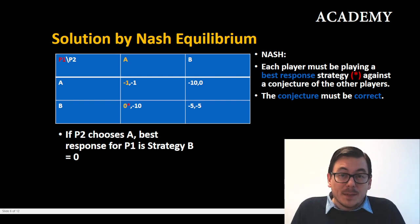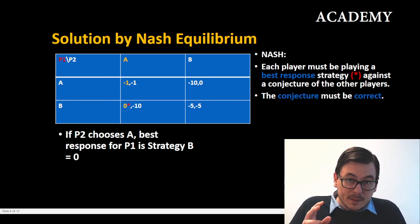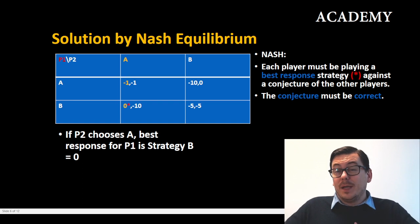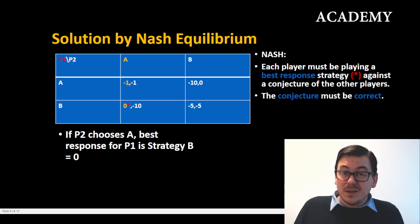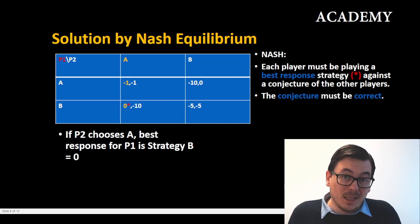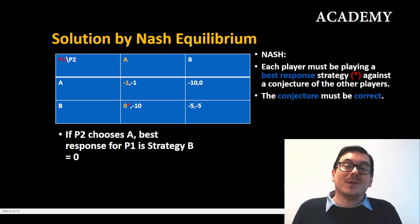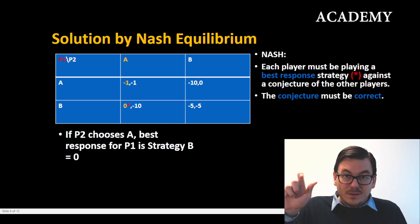When we want to analyze player one, I marked him with red. Then we must look at player two's actions. If player two plays strategy A, player one would either get minus one from playing A or zero by playing B. Of course the best response here would be strategy B because zero is better than minus one. Hence the red star.